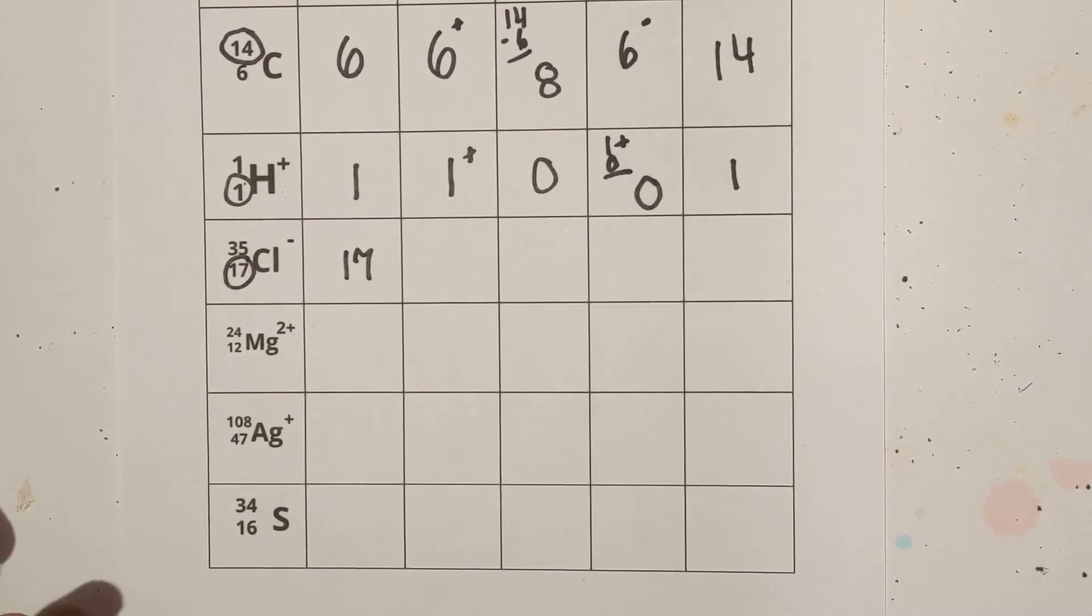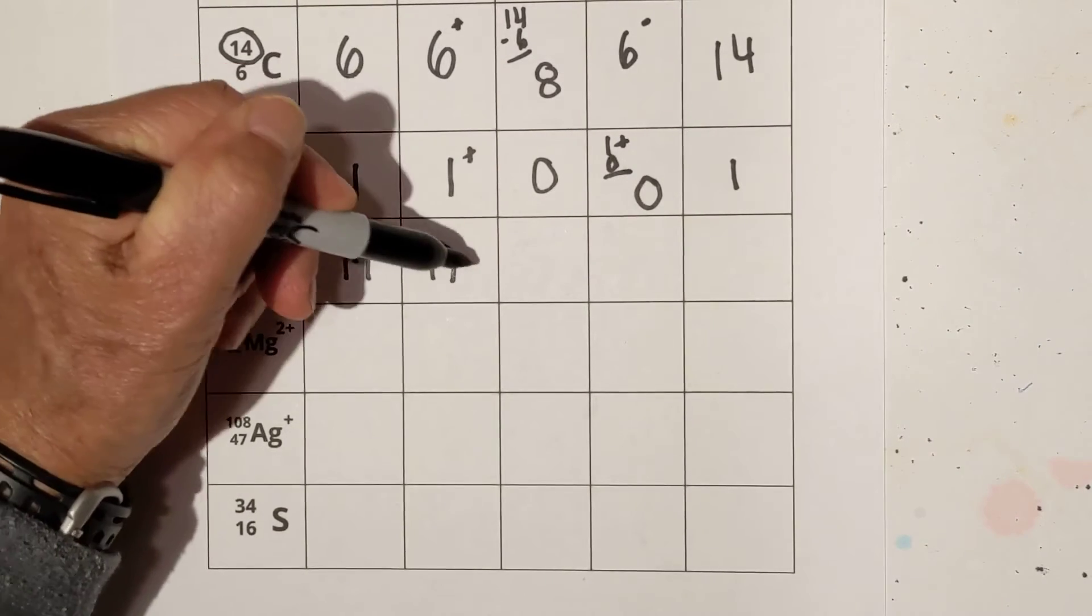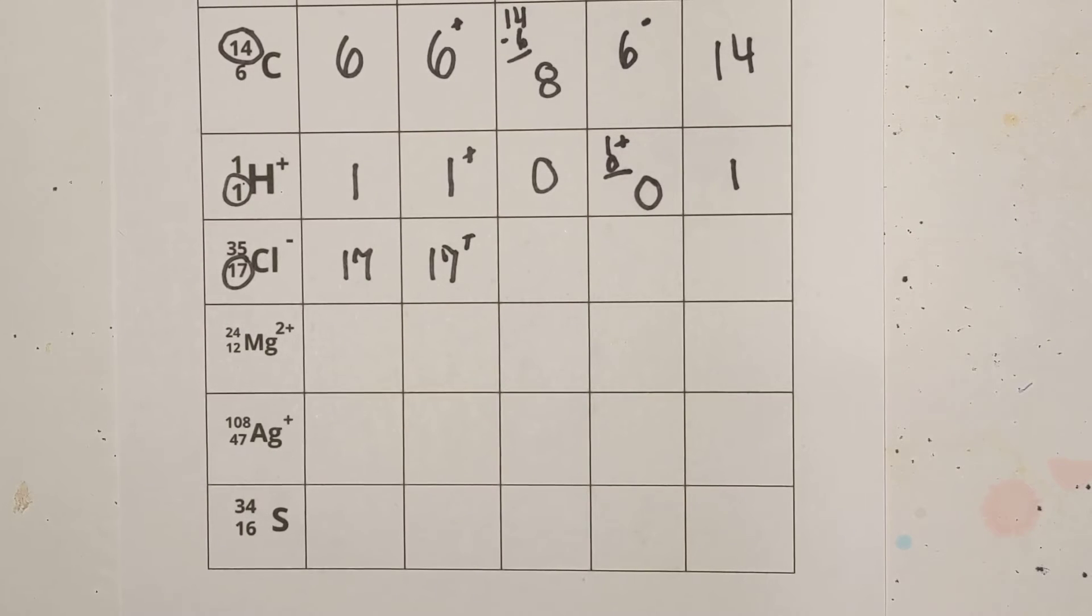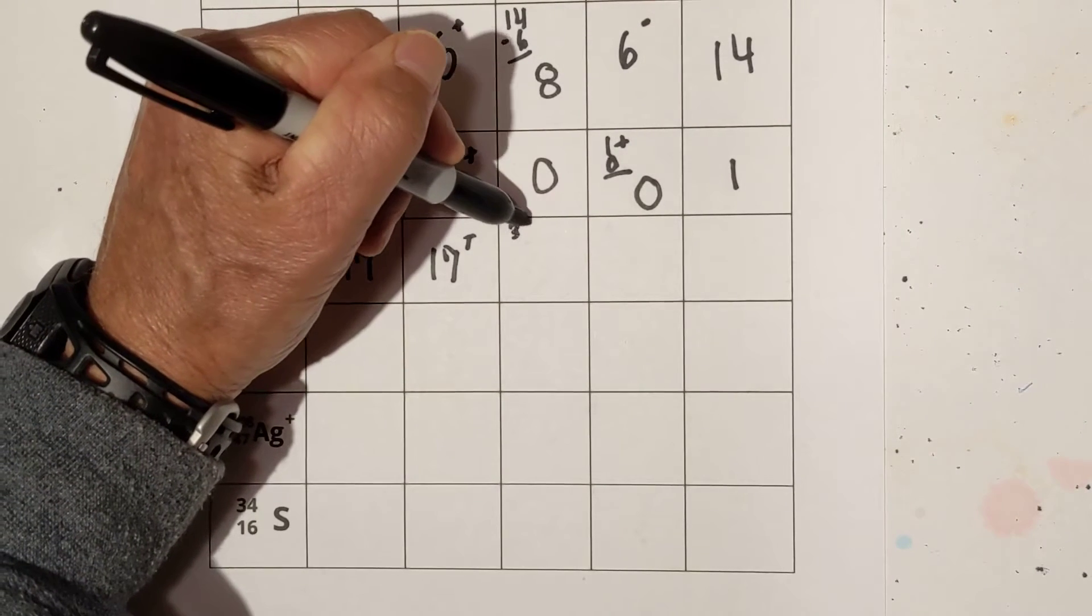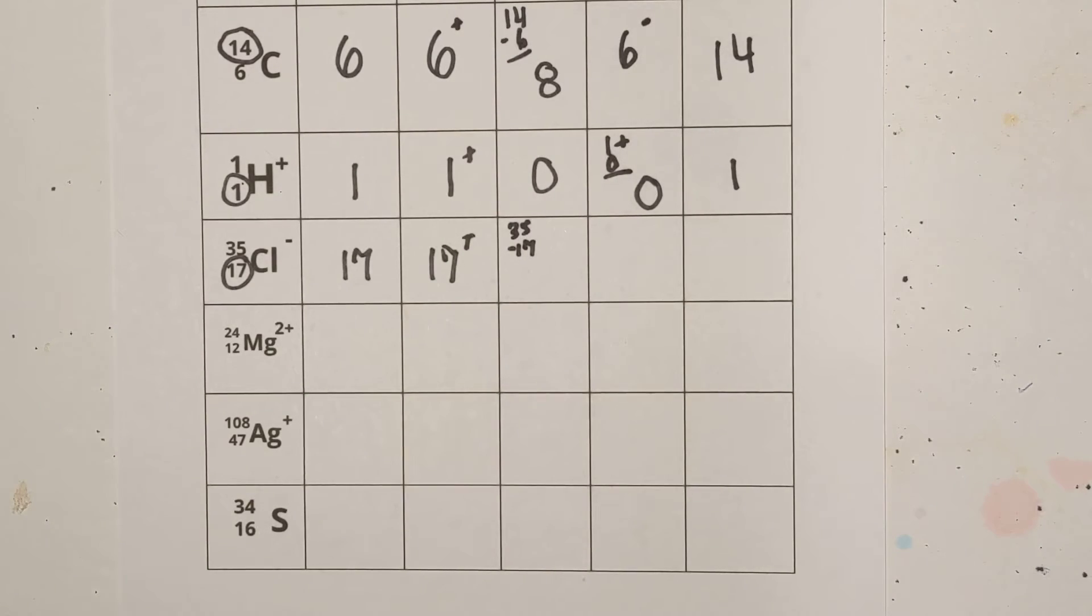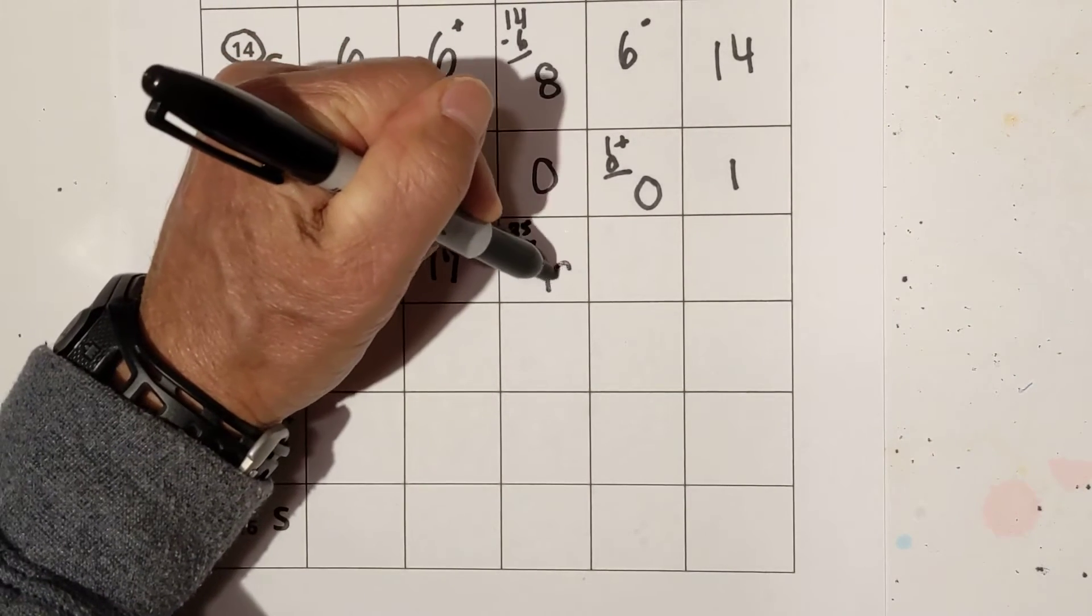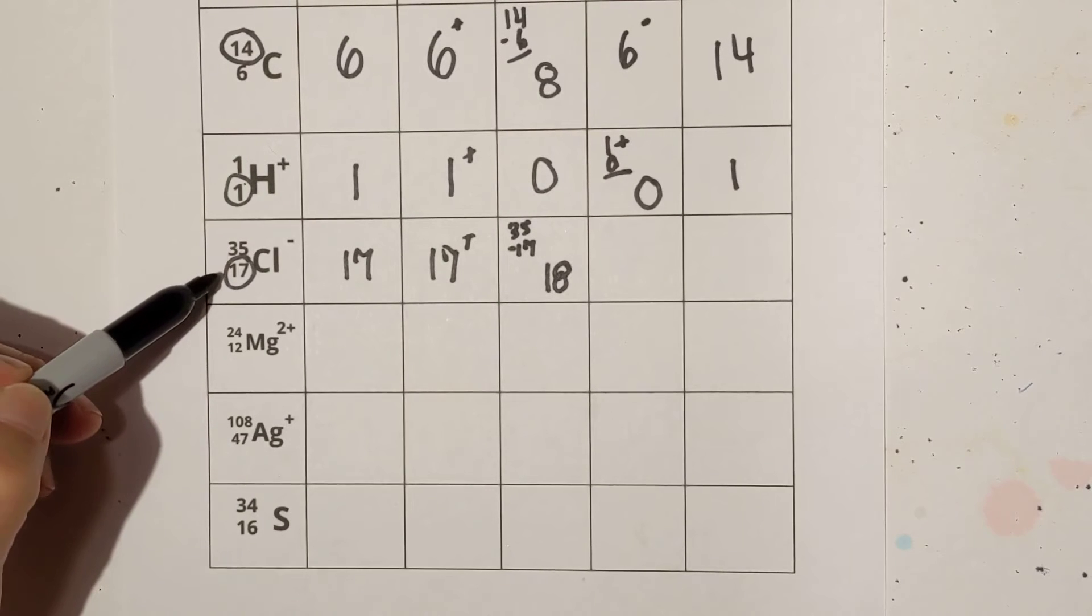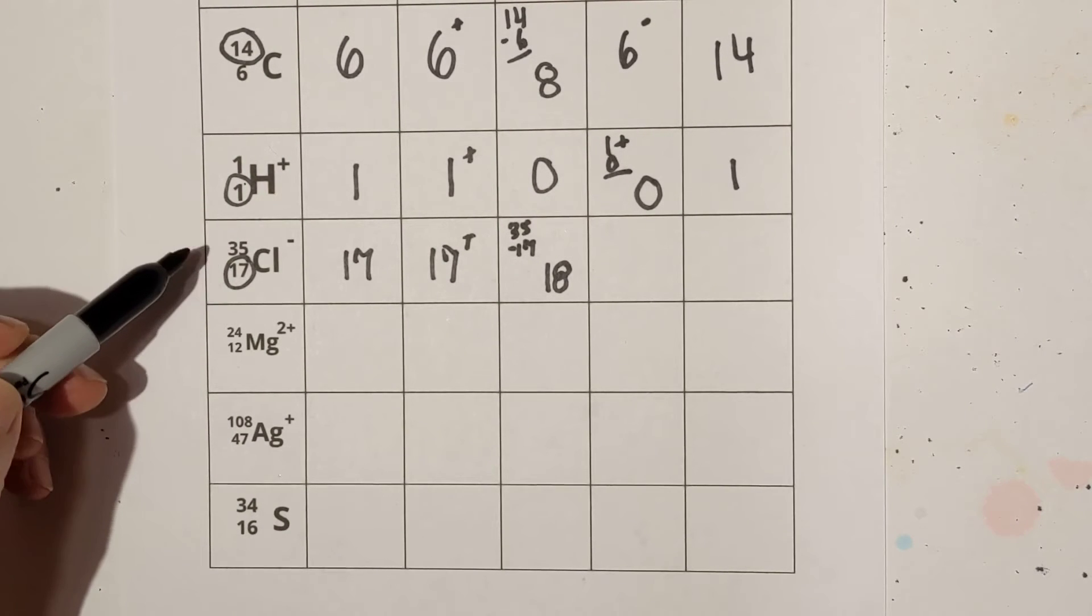I'll circle it. Number of protons is going to equal that. Remember, they're positively charged. Number of neutrons, let's take 35 minus 17. It's kind of hard what I just wrote there, and that is 18. Again, I took the mass number of 35 and subtracted the atomic number of 17.